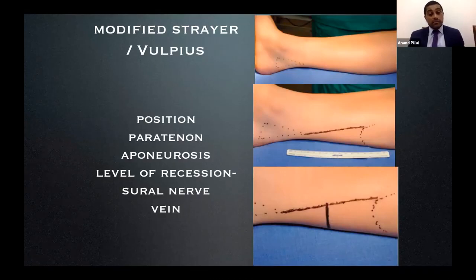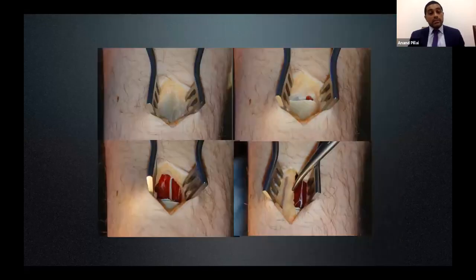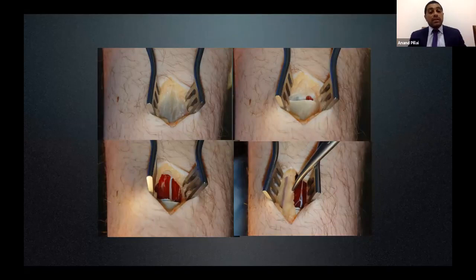I normally try to visualise the sural nerve every single time because a pseudoneuroma at this site is very painful and the patient will not be happy despite how good a correction you get. You can see the small incision, the aponeurosis exposed and cut — either a chevron or straight cut depending on preference — then dorsiflex the ankle to allow the Achilles to stretch out. You can see the sural nerve and vein sitting exactly where you would normally make your cut if you were not being careful.